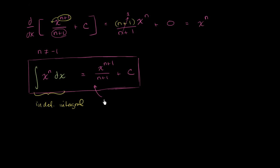Let me make that very clear: n does not equal negative 1. Once again, this thing would be undefined if n were equal to negative 1. So let's do a couple of examples just to apply this — you could call it the reverse power rule or the anti-power rule. Let's take the antiderivative of x to the fifth power.